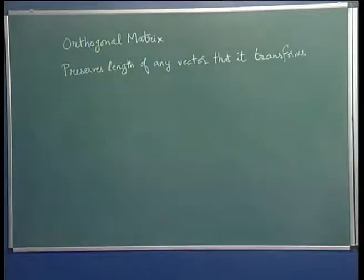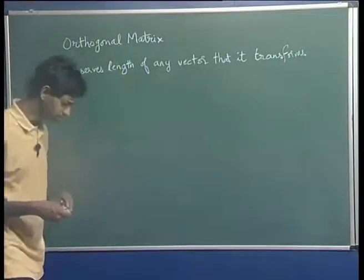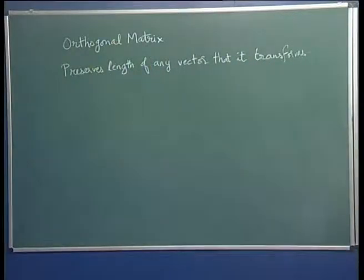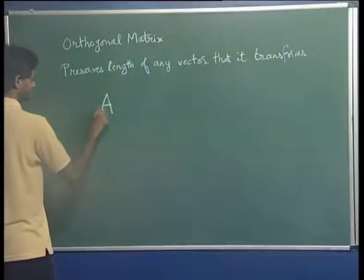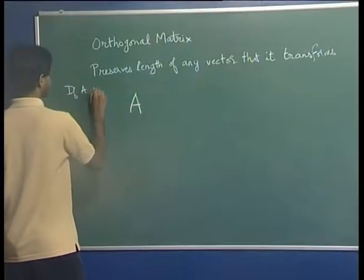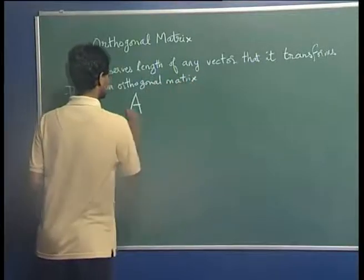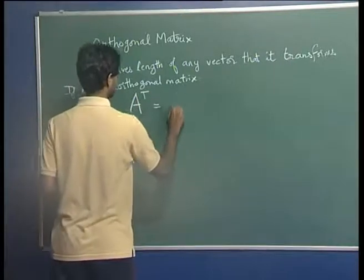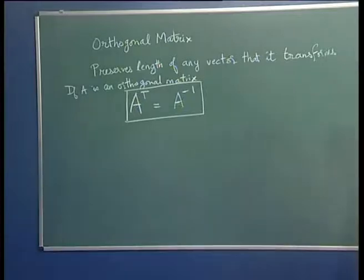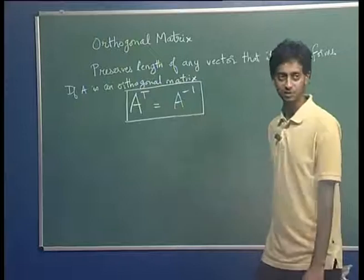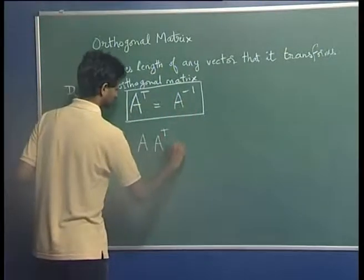An orthogonal matrix is a matrix that preserves the length of any vector that it transforms. Now we can think of length for a three-dimensional vector, but if you go to higher dimensions the meaning of length might not always be clear. So we will look at the mathematical definition: a matrix A is orthogonal if the transpose of A is equal to its inverse, that is, A transpose equals A inverse.